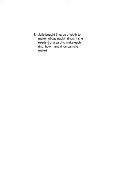Okay, let's look at number seven. Julie bought three yards of cloth to make holiday napkin rings. If she needs 3/4 of a yard to make each ring, how many rings can she make? So we're going to take Julie's three yards of cloth and divide it into sections that are each 3/4 of a yard, and we're going to figure out how many groups of 3/4, or how many portions of 3/4, there are in three. Let's show this with a tape diagram.